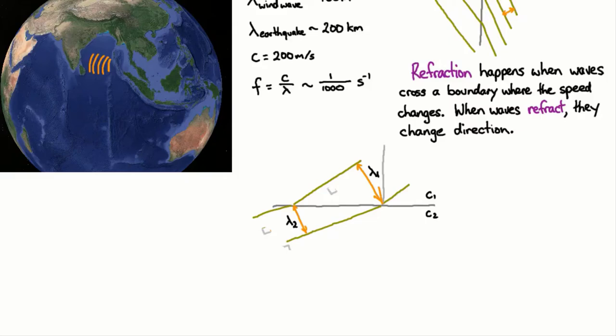If we look at the angles in there, so if we look at this angle here and this angle here, theta 1 and theta 2. Now what we can say is that the sine of theta 1 is this wavelength divided by that length there. That's the definition of sine.